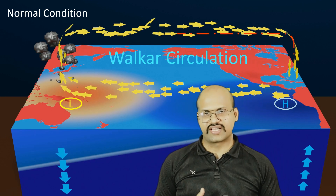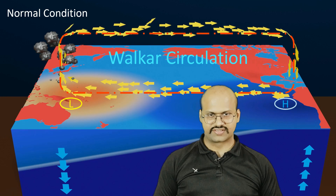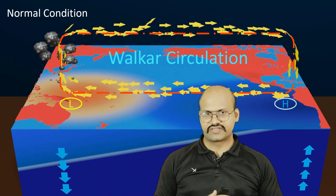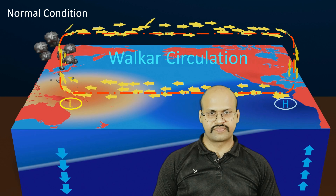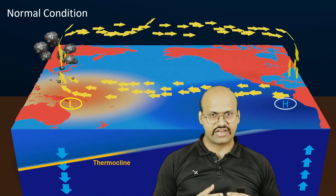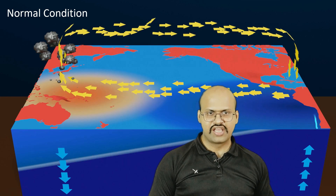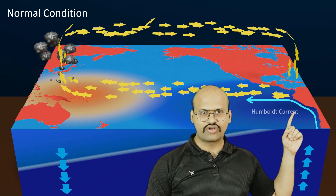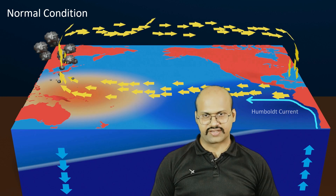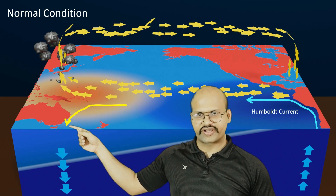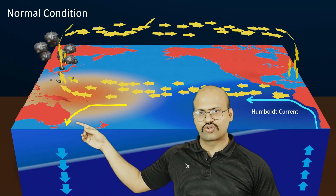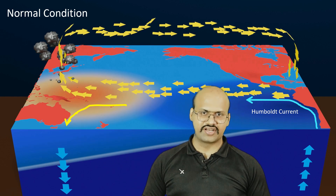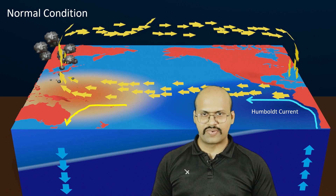This whole circulation cell is called the Walker circulation, which we have discussed in our previous El Niño video. Under normal conditions, there is a cold water current on the coastline of South America called the Humboldt current, and a warm water current on the coastal margins of Australia.